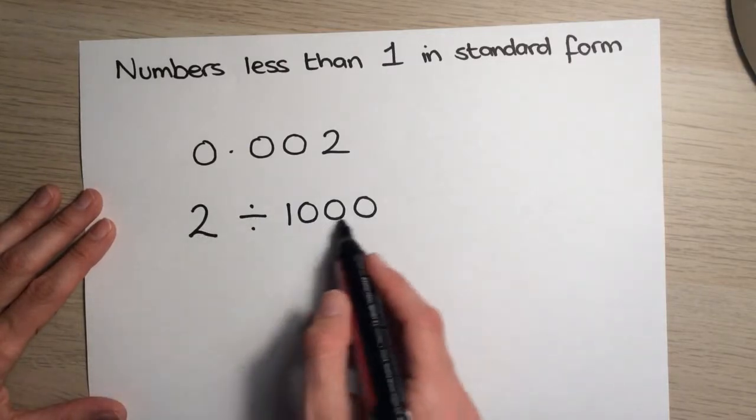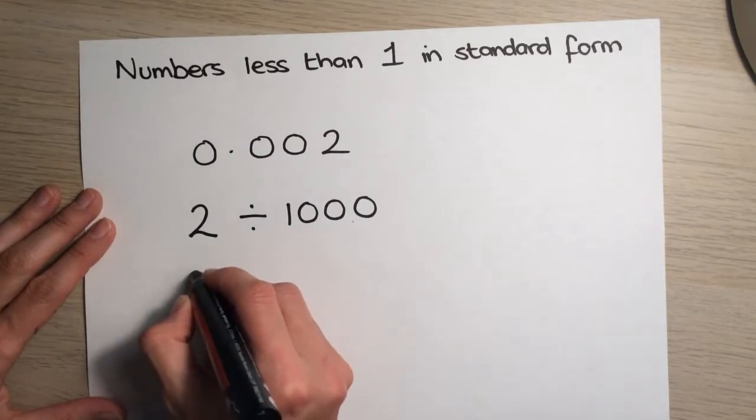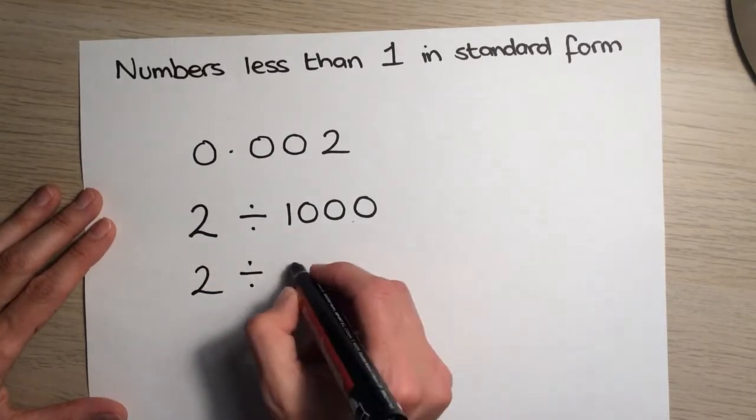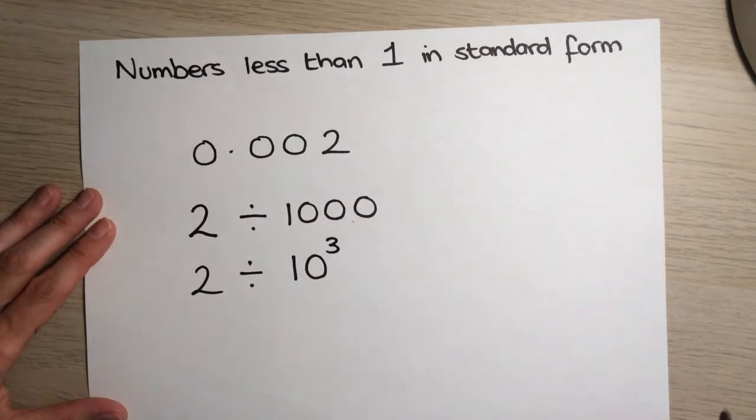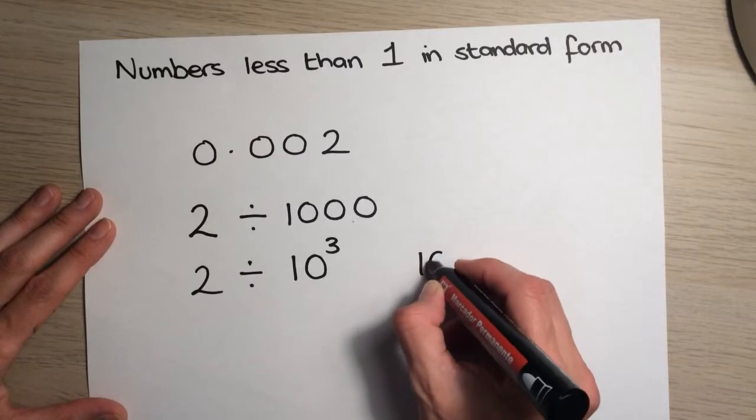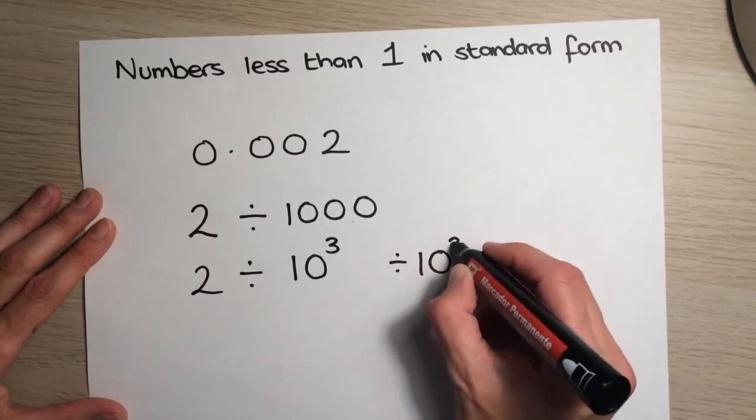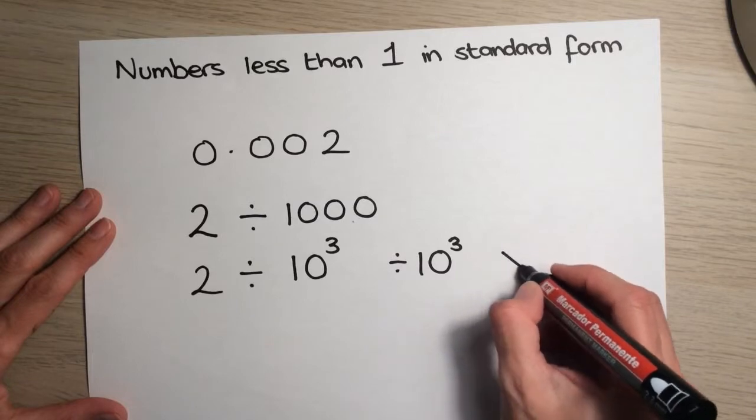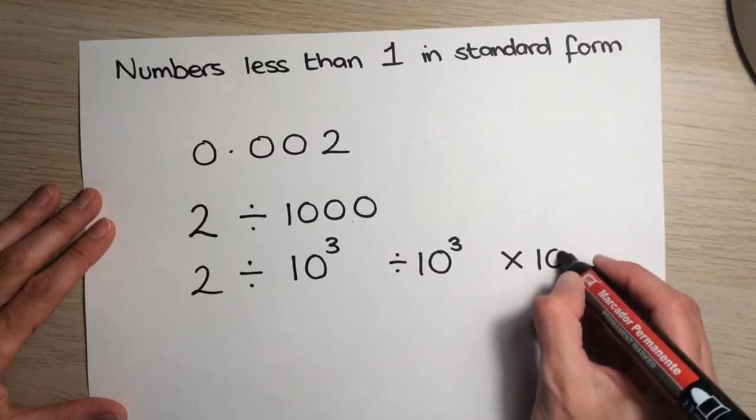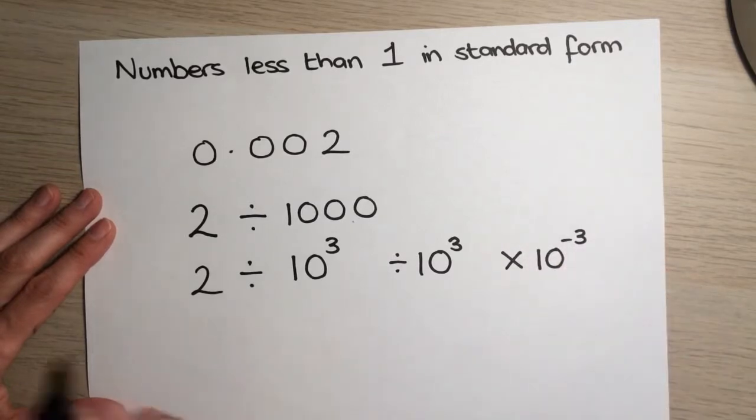Now 2 divided by 1,000 is the same as 2 divided by 10 to the power 3 because we have 3 zeros there. Now another way to write divide by 10 to the 3 is to say that it's the same as multiplying by 10 to the power minus 3.